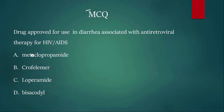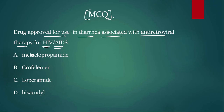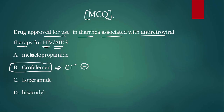Moving on to the second MCQ: which drug is approved for use in diarrhea associated with antiretroviral therapy for HIV/AIDS? Options are: metoclopramide, crofelemer, loperamide, and bisacodyl. If you are answering crofelemer, then you are 100% correct. Crofelemer is a chloride channel inhibitor and is used to manage diarrhea due to HIV drugs.